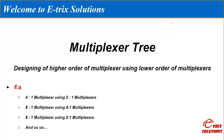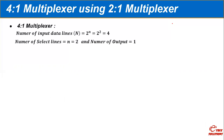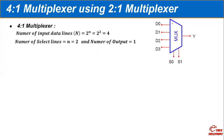Let us first see the designing of a 4x1 multiplexer using 2x1 multiplexers. As we all know, the 4x1 multiplexer has four input data lines, one output, and two selection lines required to control the four input data lines. This is the block diagram of a 4x1 multiplexer in which D0, D1, D2, D3 are the four input data lines, S0 and S1 are the selection lines, and Y is the output.